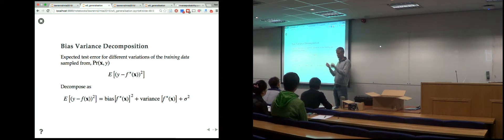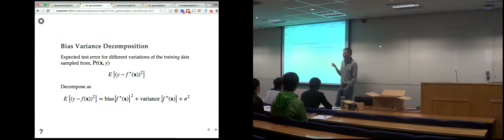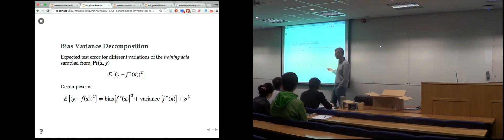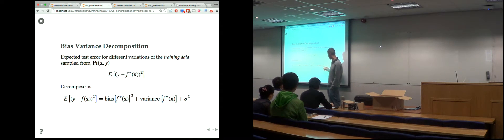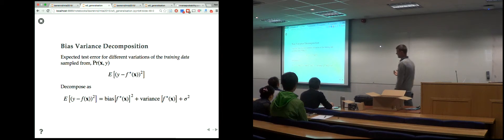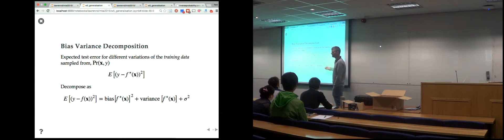As you get an overly complicated model, you start to have different predictions across different training sets. Interestingly, you can get high variance even if your model is correct — even if the data really does follow a sixth-order polynomial. You still get high variance because you don't have enough data to determine the parameters. Variance error reduces as you get more and more data.